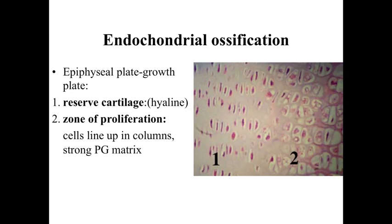To maintain reserve cartilage while undergoing endochondral ossification, underneath the zone of reserve cartilage we have a zone of proliferation. Within this zone, cartilage cells divide and line up in columns within the cartilage matrix — essentially undergoing interstitial cartilage production. These cells may appear as isogenous groups, and the region may show slight basophilic staining with a strong proteoglycan matrix.